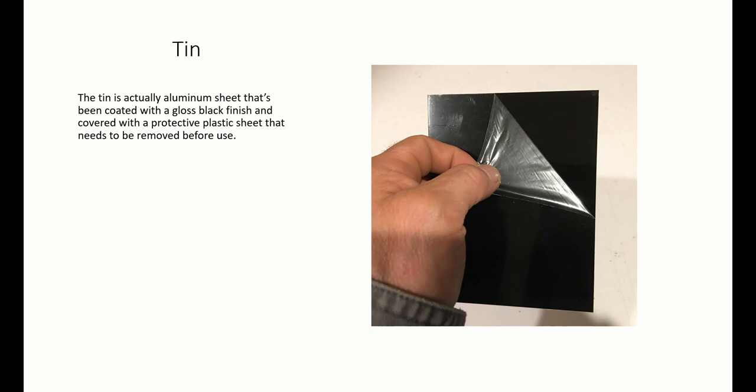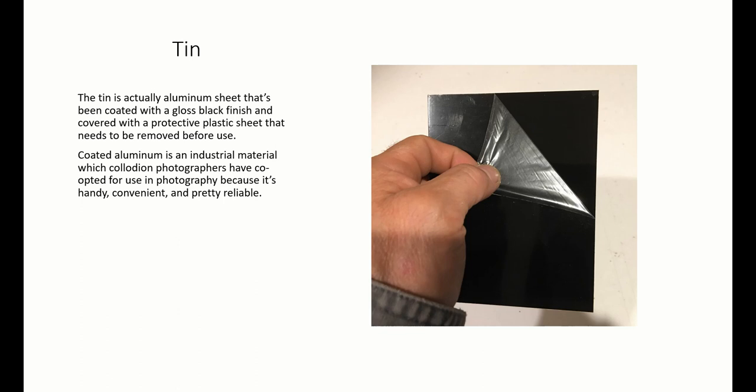The tin. The tin is actually aluminum sheet that's been coated with a gloss black finish and covered with a protective plastic sheet that needs to be removed before use. Coated aluminum is an industrial material which collodion photographers have co-opted for use in photography because it's handy, convenient, and pretty reliable.